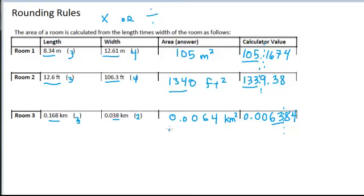I could also present that in scientific notation as 6.4 times 10 to the minus 3 km². Either way would be an appropriate answer to 2 sig figs.